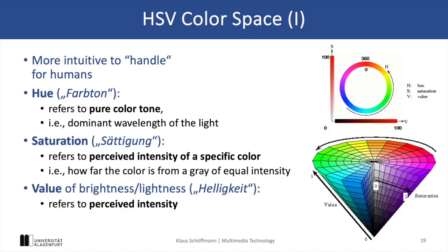This is completely different with the HSV color space, which separates hue, saturation, and value, facilitating such color manipulation. Hue represents the actual pure color tone, saturation refers to intensity, and value refers to brightness. This makes HSV much more intuitive for us humans.